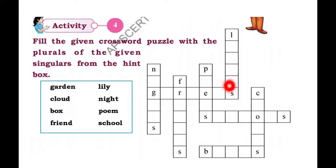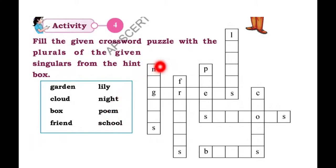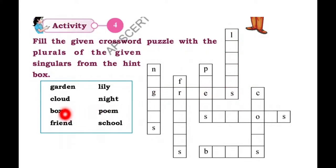As we learned the lesson, I am going to give you a puzzle — some grids. You know the words which are in the box: garden, cloud, box, fan, lily, night, poem, schools. Form the plural forms. Night — what is the plural form of night? Nights. Garden — what is the plural form? Gardens. I have given you two hints, filling two grids. The remaining words are to be filled by you. Students, you fill all the grids — write the plural forms of these words.